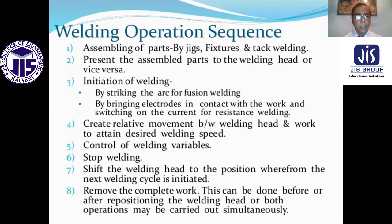Welding operation sequence: Number one, assembly of parts by jigs, fixtures, and tack welding. Number two, present the assembled parts to the weld head, or vice versa. Number three, initiation of welding by striking the arc for fusion welding, or by bringing electrodes in contact and switching on the current for resistance welding. Number four, create relative movement between the weld head and arc to attain desired welding speed. Number five, control of welding variables. Number six, stop welding. Number seven, shift the welding head to the position where the next welding cycle is initiated. Remove the completed work. This can be done continuously.